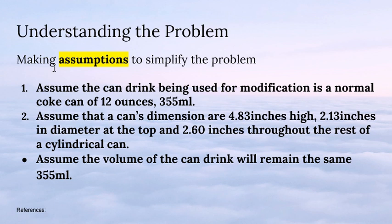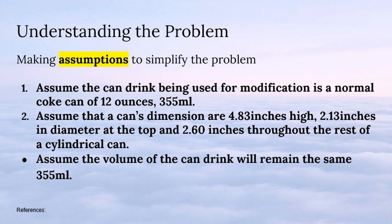Understanding the problem: we make the following assumptions to simplify the problem. First, we assume that the drink can being used for modification is a normal canned drink of 12 ounces, 355ml. Second, we assume that the can's dimensions are 4.83 inches high, 2.13 inches in diameter at the top and 2.60 inches throughout the rest of the cylindrical can. Third, we assume that the volume of the can drink will remain the same at 355ml.